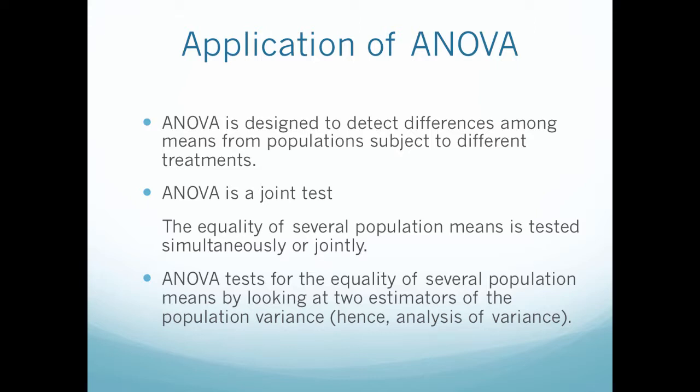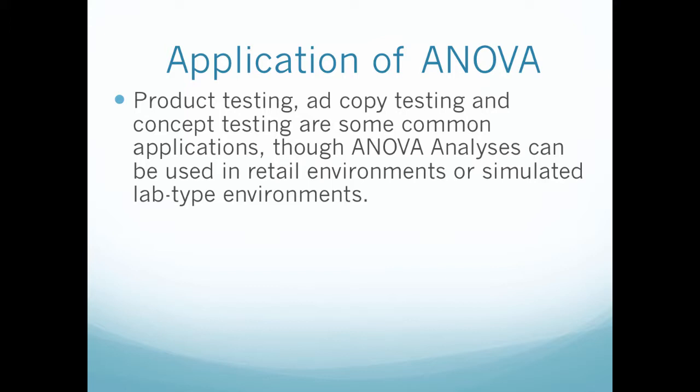So the ANOVA looks for the equality of several population means by looking at two estimators of the population variance, hence the analysis of variance. Before, in the Z-test and the T-test and the two-population T-test, I feel like we have focused on means, and that's all we have dealt with and compared. In ANOVA, we are going to use variances. We focus on variances because we have multiple populations, and we need to know the variance within each population, as well as the variance between each different population.